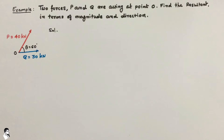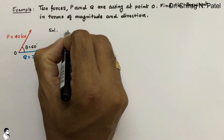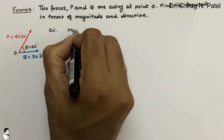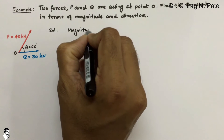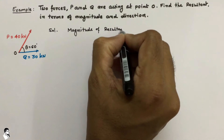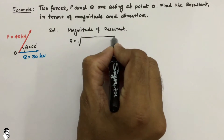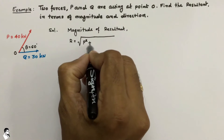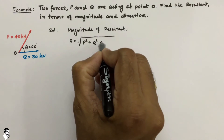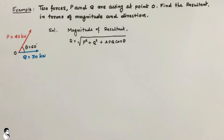As we saw in the lecture on the law of the parallelogram, to find out the magnitude we use the equation derived in the earlier lecture. The magnitude of the resultant R is equal to the square root of P squared plus Q squared plus 2PQ cos theta. This is the equation that gives the magnitude of the resultant.